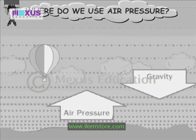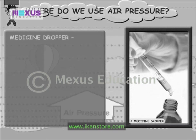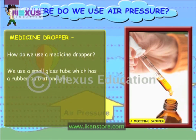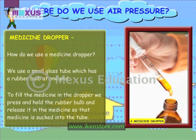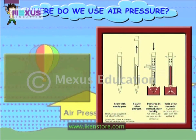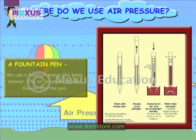Where do we use air pressure? In a medicine dropper. We use a small glass tube which has a rubber bulb at one end. To fill the medicine in the dropper, we press and hold the rubber bulb and release it in the medicine so that the medicine is sucked into the tube. A fountain pen works in the same manner — the air pressure pushes the ink into the pen.